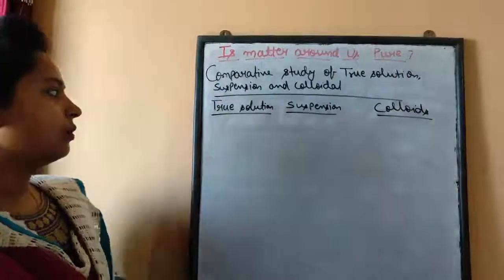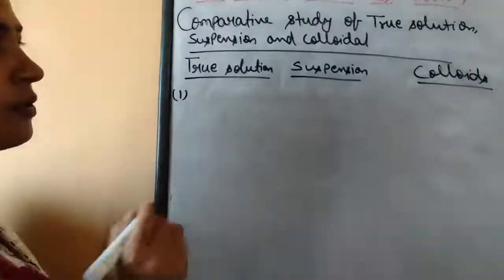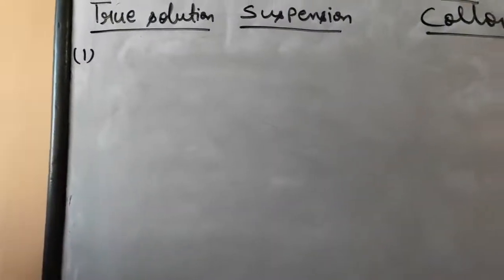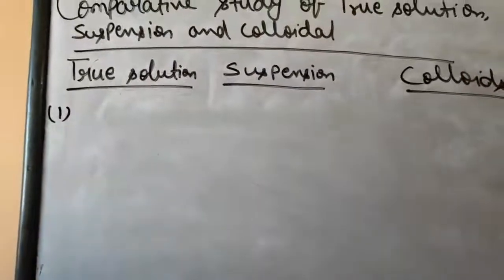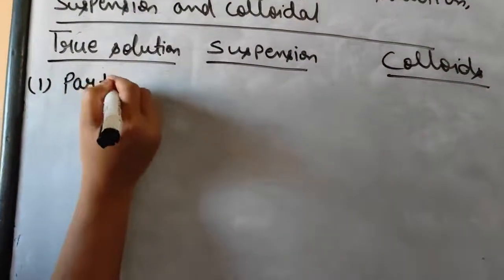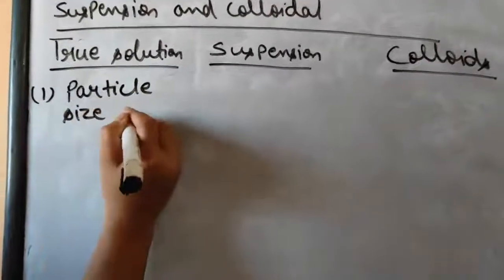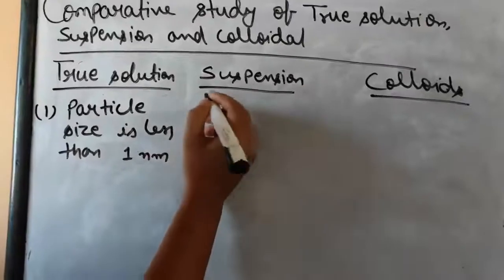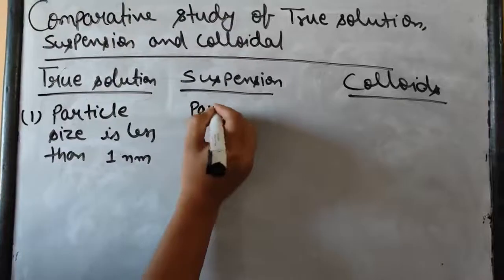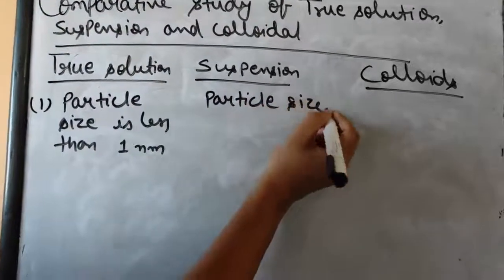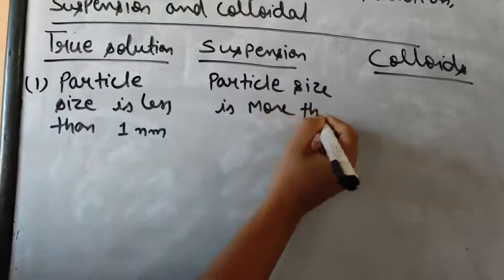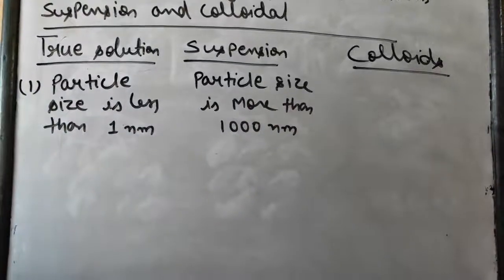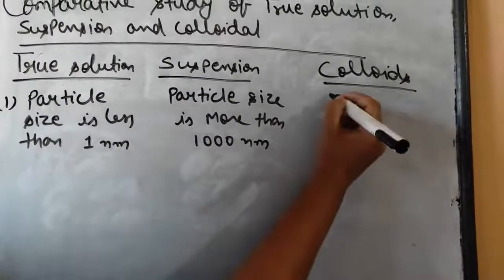Let's start with the particle size, because we know the particle size is the main basis for the classification of solution into these three categories. So what is the particle size of true solution? You can write: particle size is less than one nanometer. Here the particle size is more than thousand nanometers, and for colloids the particle size is in between these two, that is one nanometer to thousand nanometers.